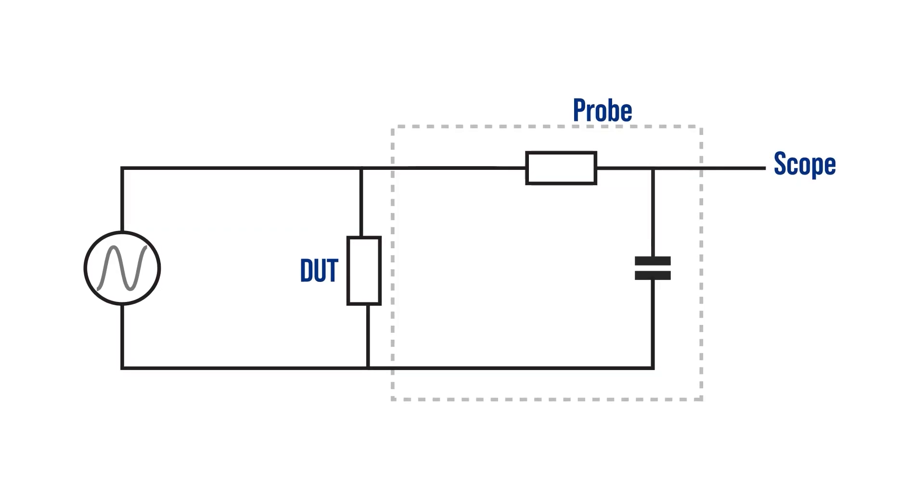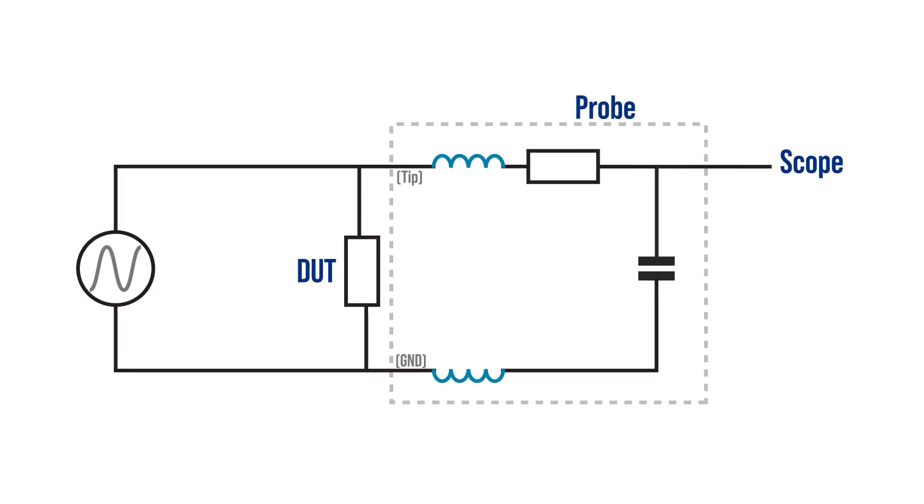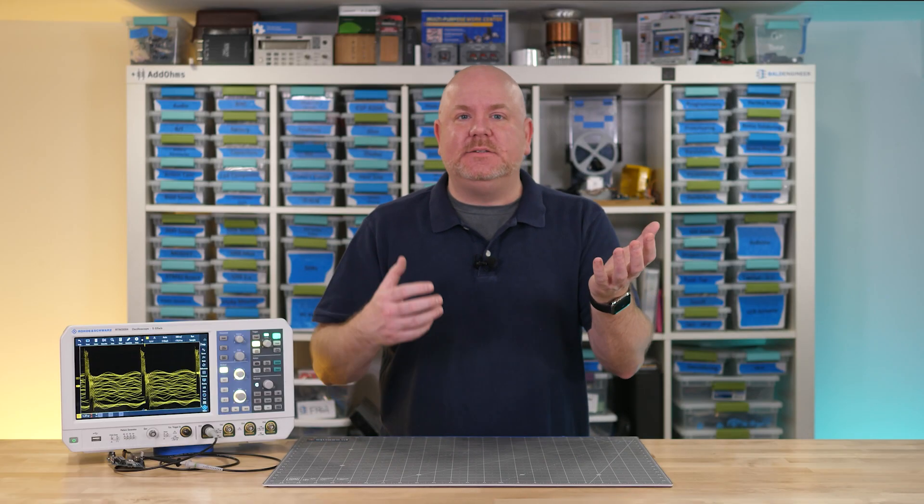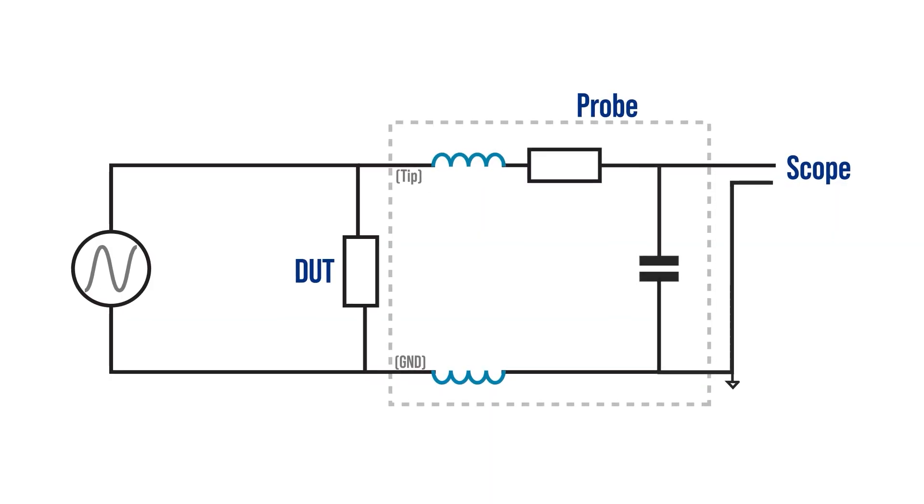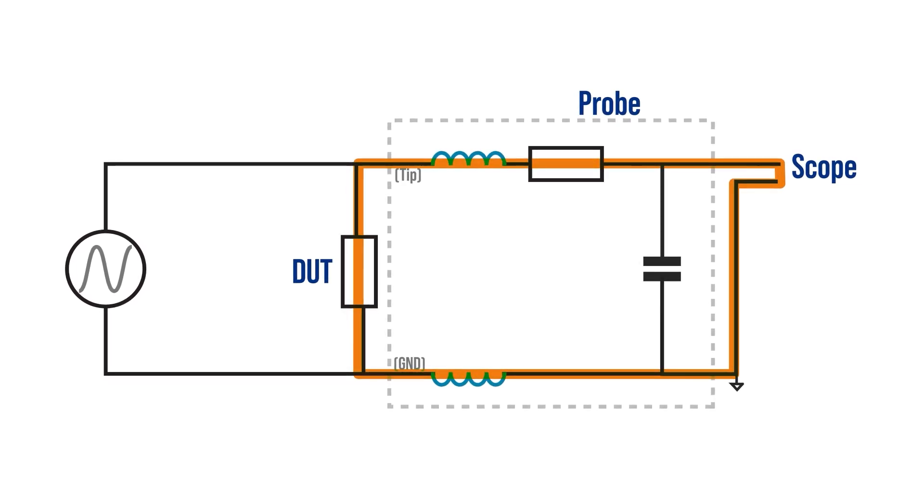Going back to our simple model we need to add some inductors which represent the probe tip and the ground wire. Now our simple probe model is starting to get complex. Yeah complex because reactants and complex number never mind. So where am I going with all of this? These extra passive elements affect the signal the oscilloscope sees because they are in the total ground loop or return path.